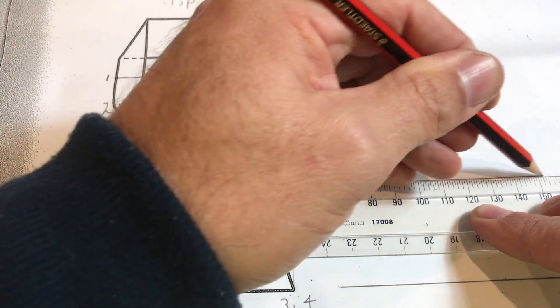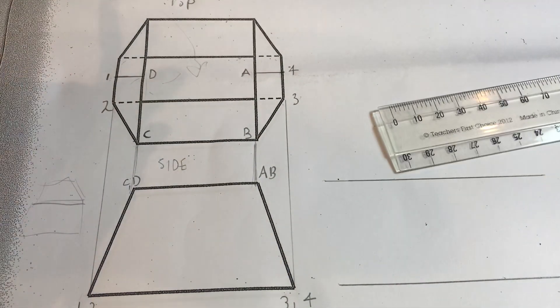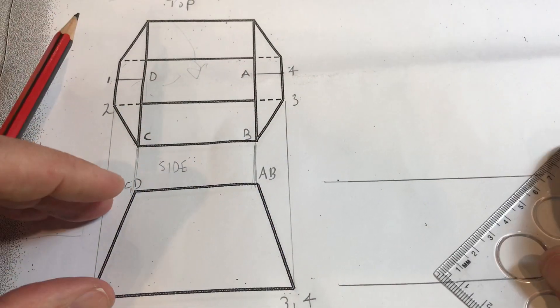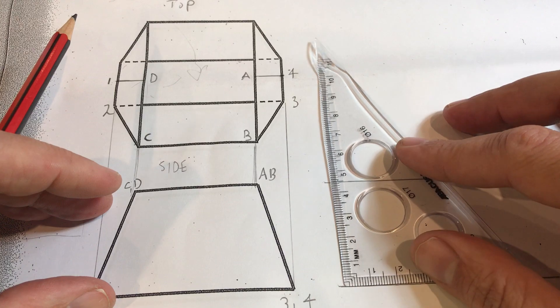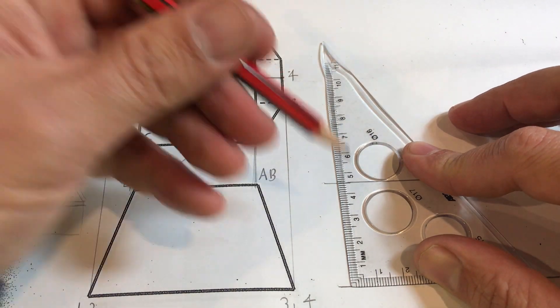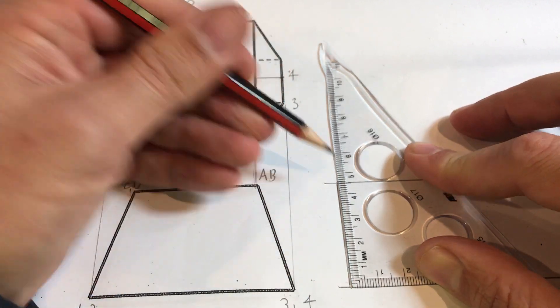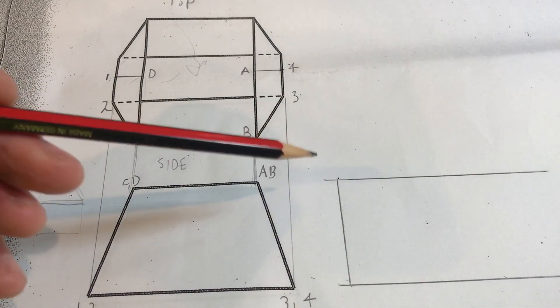And then if we want to make sure that we've got a nice 90 degree angle, we do this to make it 90 degrees. Now this is what we're going to transfer any lengths that are not real onto the surface.